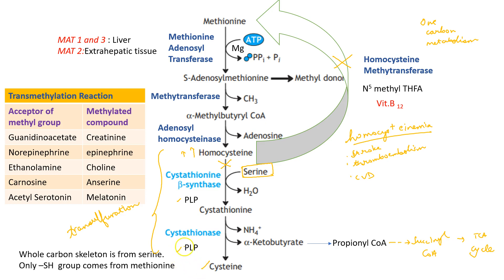In cysteine biosynthesis, the trans-sulfuration reaction occurs and the whole carbon skeleton is derived from serine, which is incorporated with the help of cystathionine beta-synthase. Only the SH group comes from methionine.